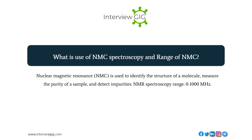What is the use of NMR spectroscopy and its range? NMR spectroscopy is used to identify the structure of a molecule, measure the purity of a sample, and detect impurities. The NMR spectroscopy range is 0–1000 MHz.